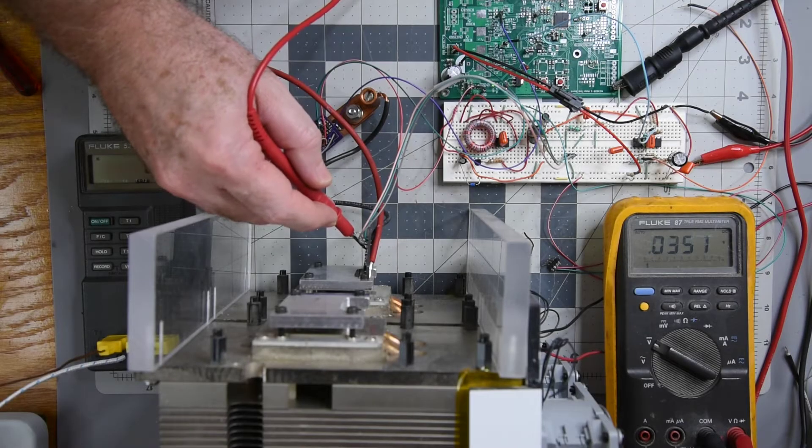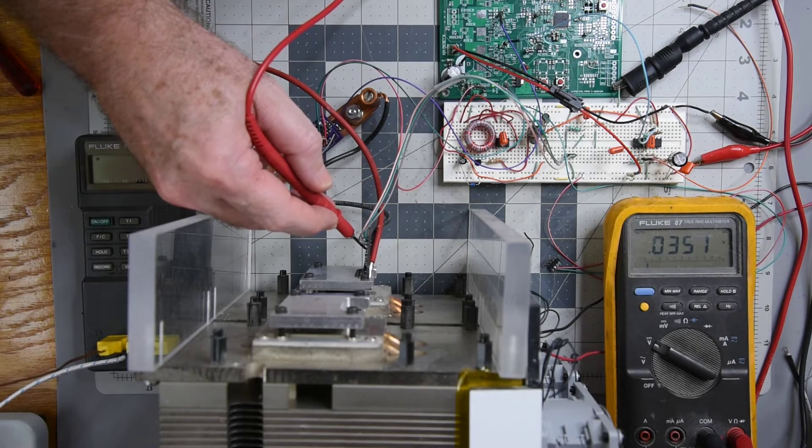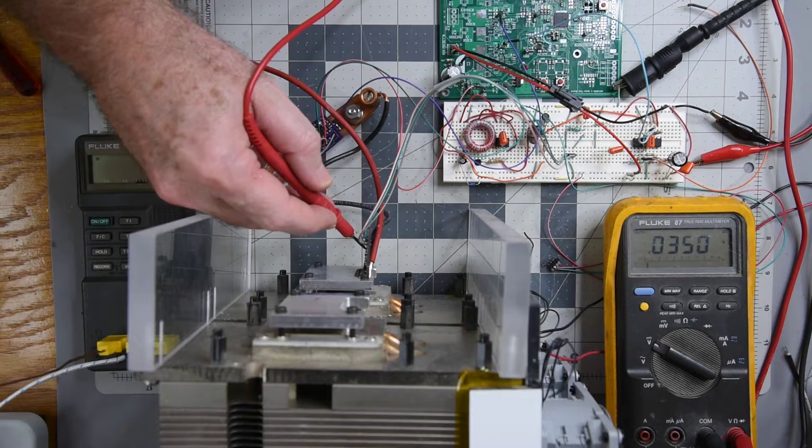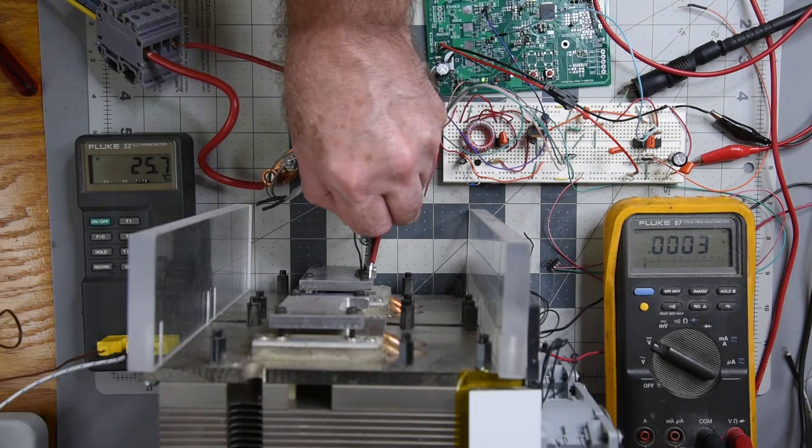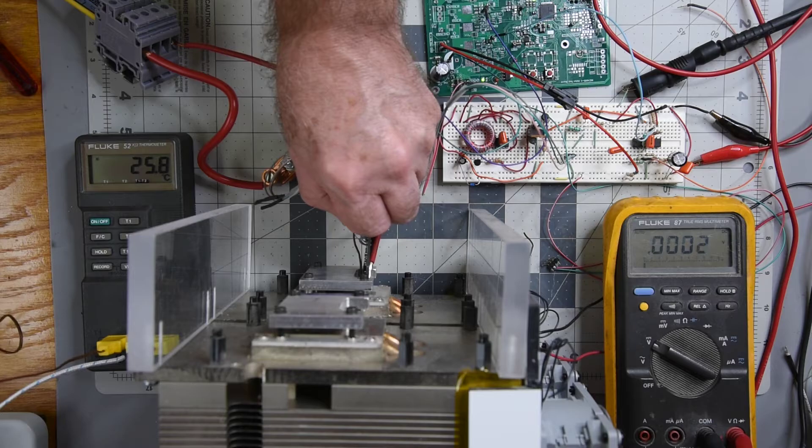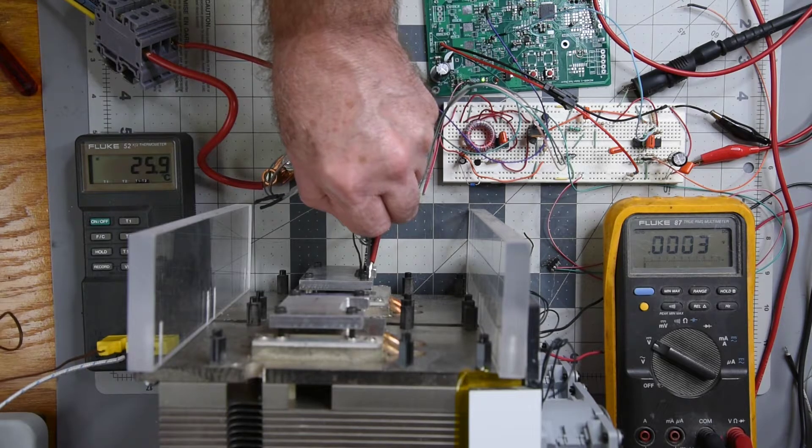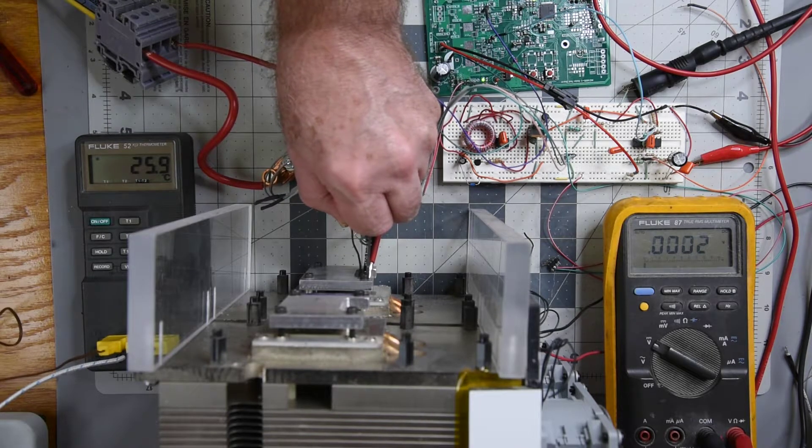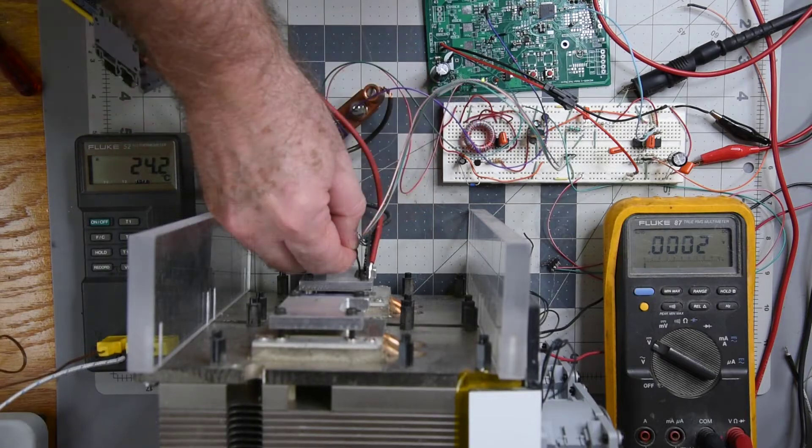Now I have the same MOSFET on the old G5 heat sink and have it running at 100 watts. About 26 degrees drain lead to ambient. I was expecting it to be lower than the Noctua heat sink.